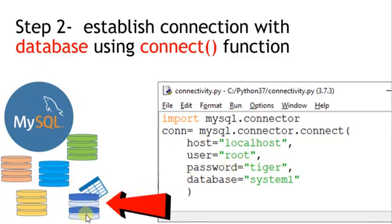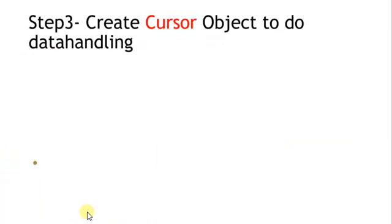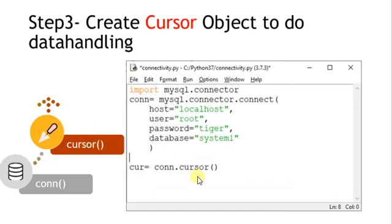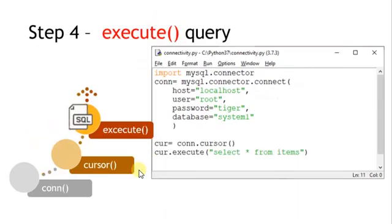Step three: once the connection is established, we need a tool to fetch records from the table — that is the cursor object. This object is used to execute statements and communicate with the database. The cursor object is created using the cursor() function on the connection object. So in total we have two objects: the connection object and the cursor object.